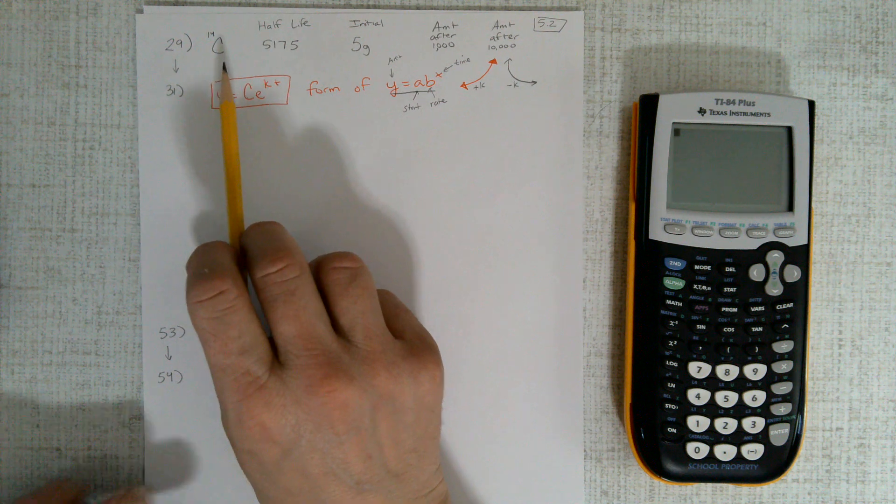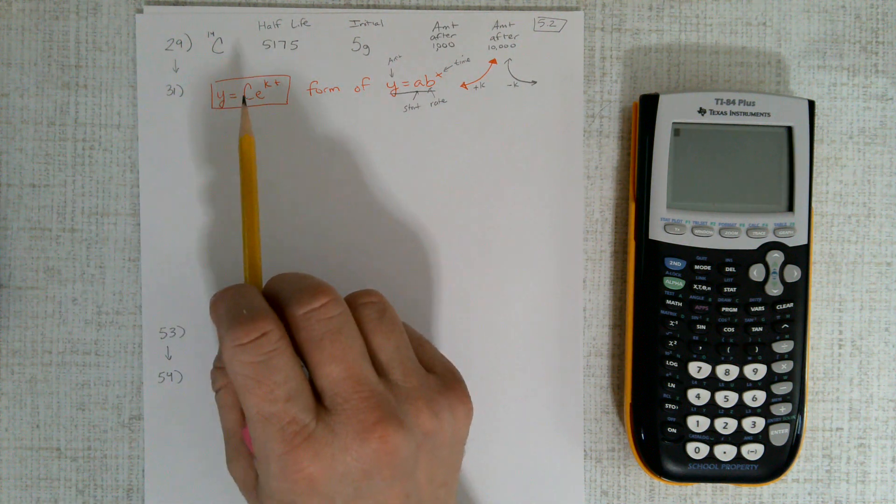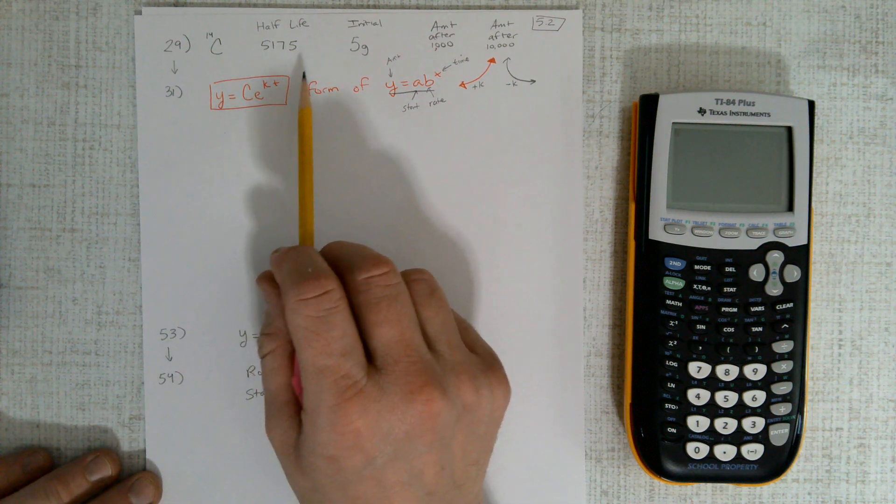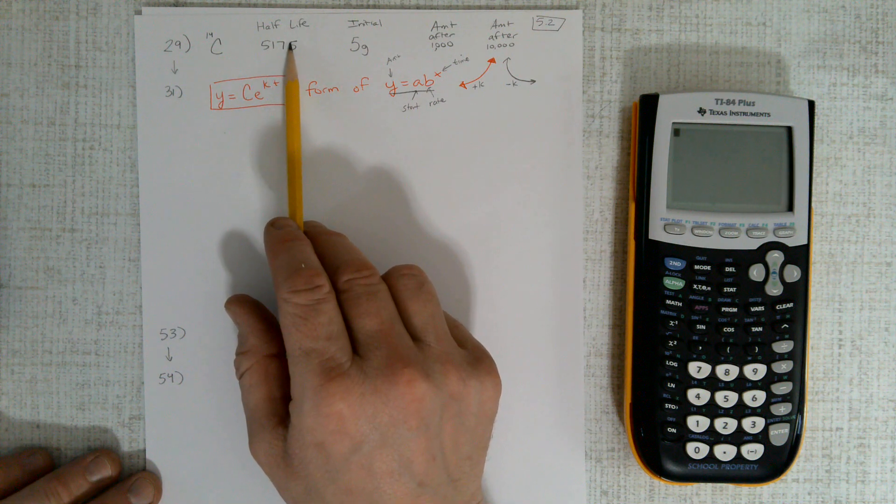So first, problem 29 says we have an element, carbon-14 I believe, and it says the half-life is 5,715 years.